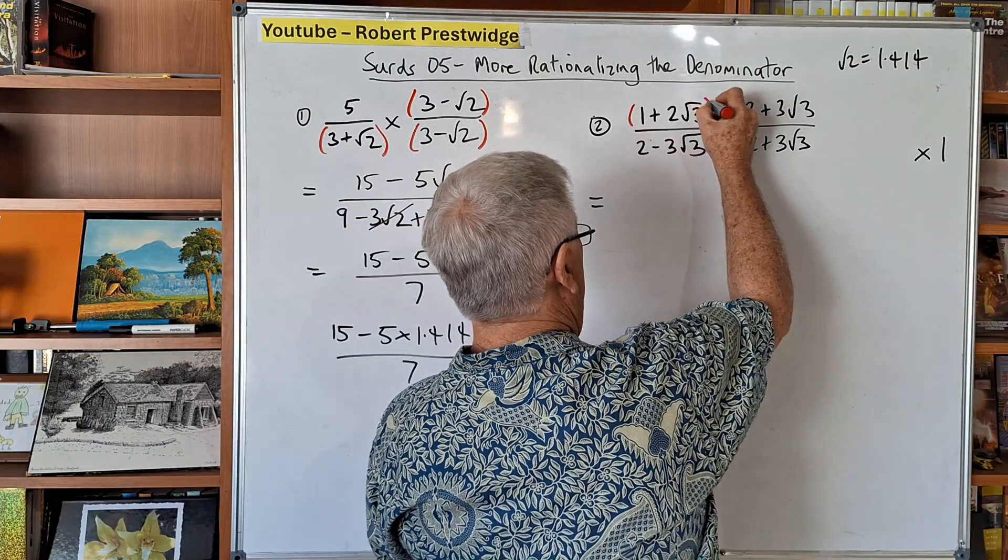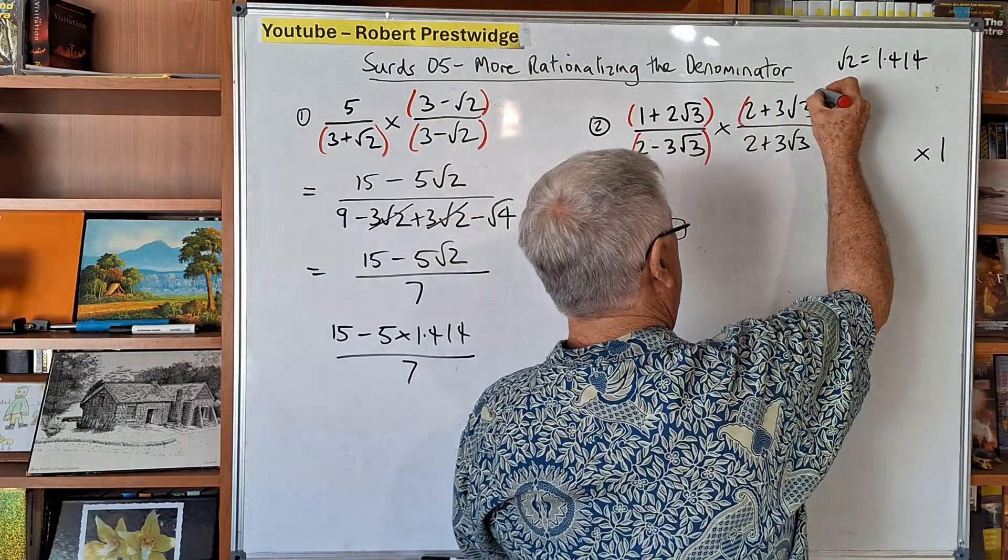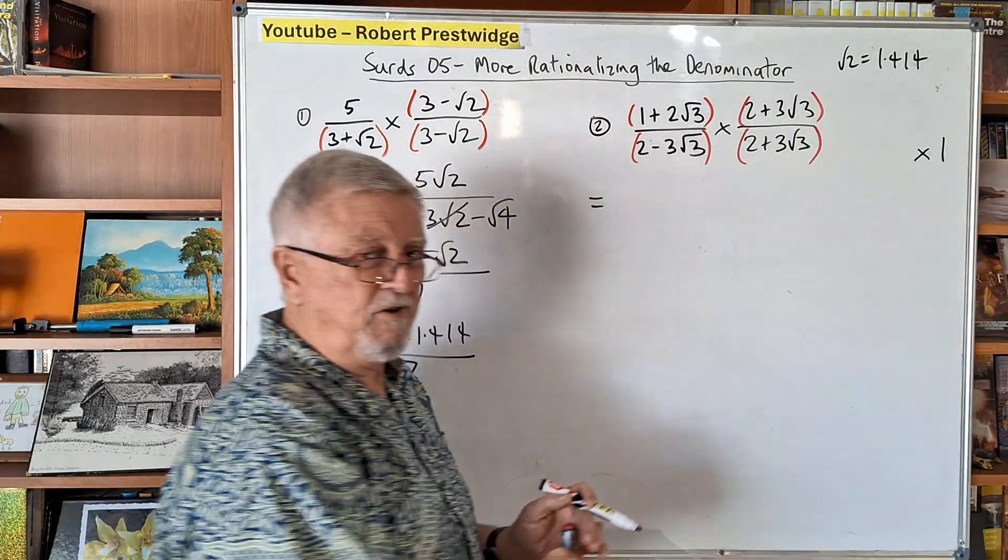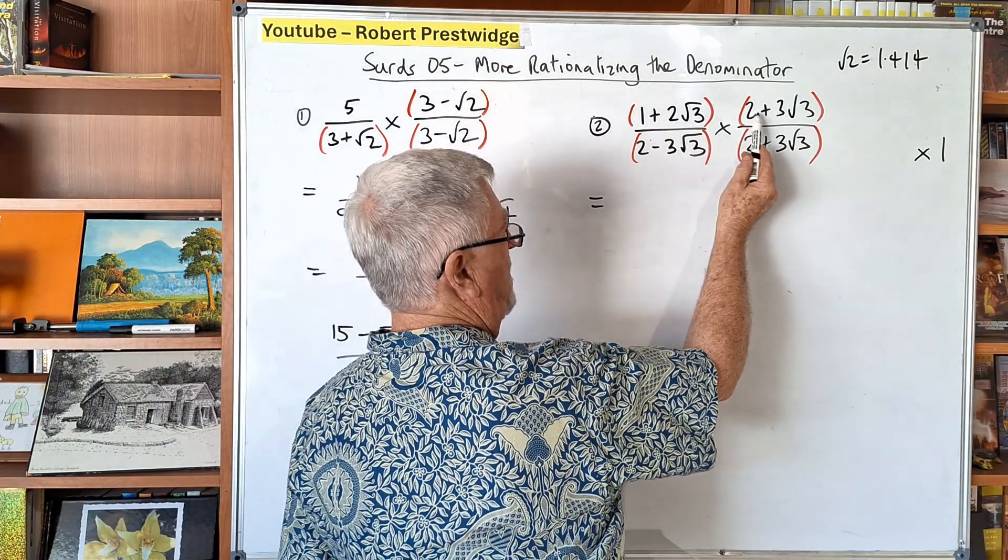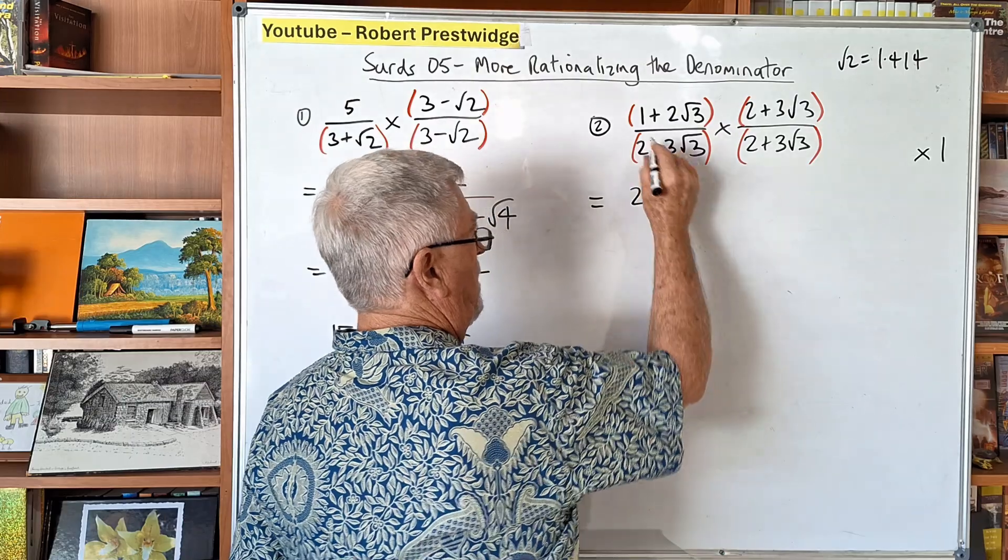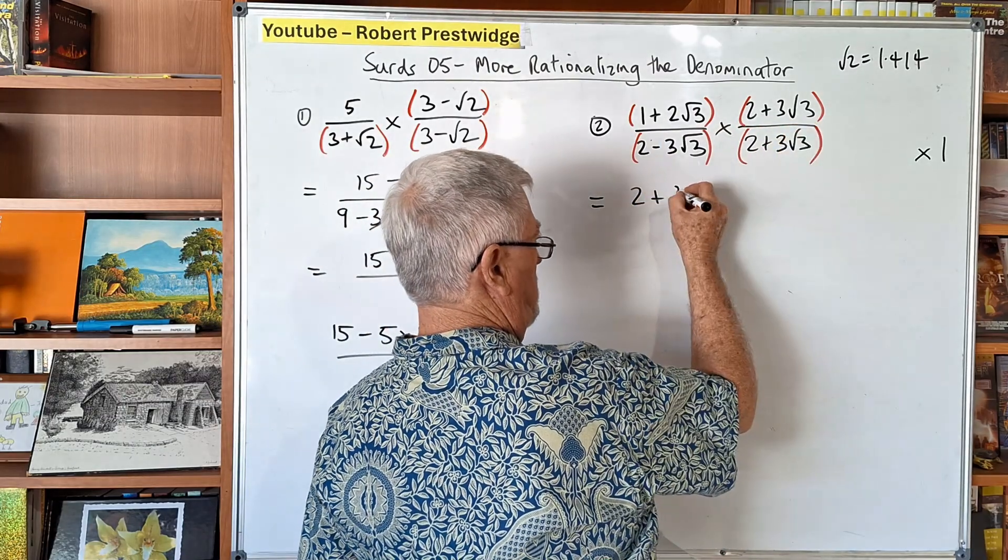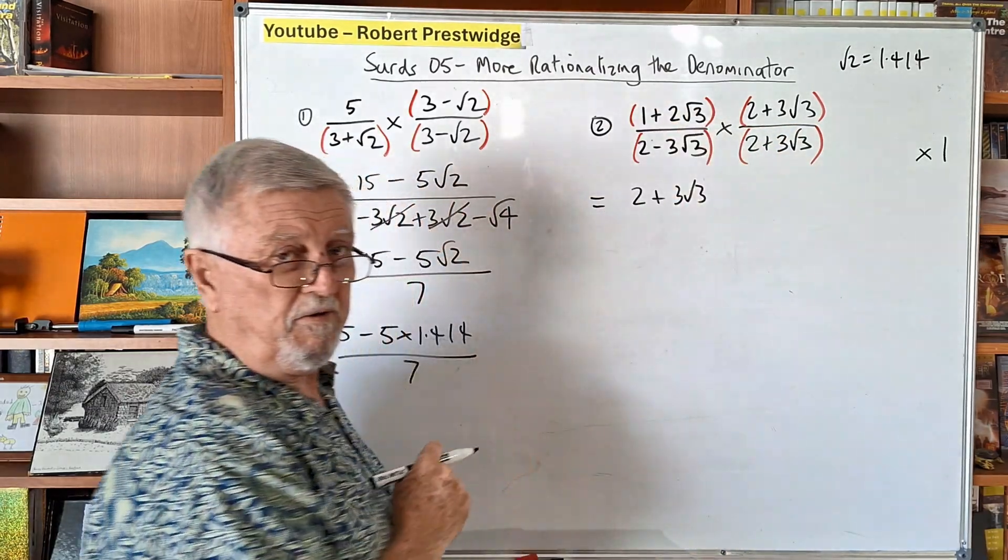I am going to write the brackets in. If you come away with one thing from this, it's about putting the brackets in and the times by 1. Let's have a look what we've got. 1 times the 2 is 2. 1 times the 3 root 3 is 3 root 3. Finish with the 1s.